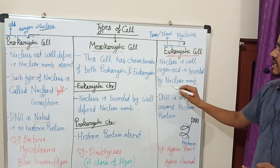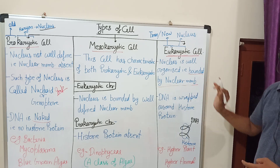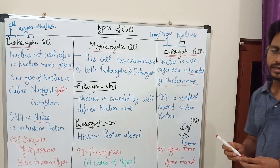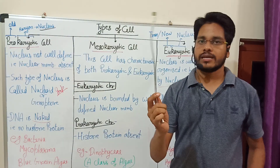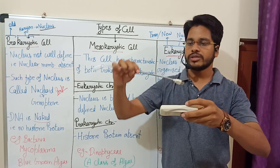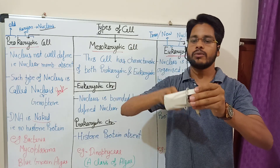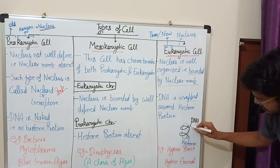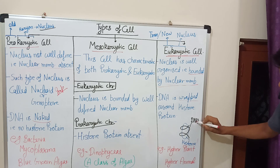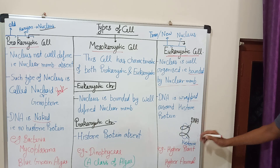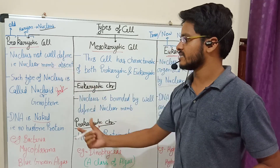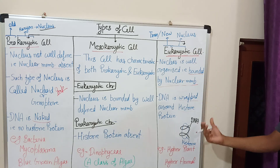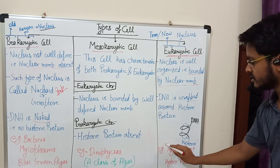In prokaryotic cells the nuclear membrane is absent, but in eukaryotic cells the nuclear membrane is present. Also, in eukaryotic cells, DNA is wrapped around histone protein — like this diagram shows: the DNA wraps around the histone protein. In prokaryotic cells DNA is naked with no histone protein. Examples of eukaryotic cells are higher plants and higher animals.